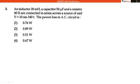An inductor 20 mH, a capacitor 50 μF and a resistor 40 Ω are connected in series across a source of EMF, V = 10 sin 340T. The power loss in AC circuit is. The circuit has inductor, capacitor and resistor connected in series with AC circuit whose EMF is 10 sin 340T.